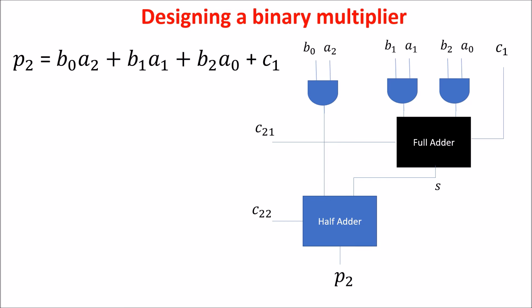In general, we use a full-adder if we have to add 3 bits, and an half-adder if we have to add 2 bits.